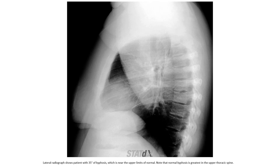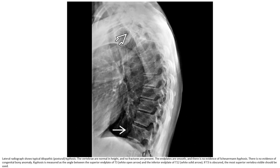Note that normal kyphosis is greater in the upper thoracic spine. In idiopathic kyphosis, the vertebrae are normal in height and no fractures are present. The endplates are smooth with no evidence of Scheuermann kyphosis, and there is no evidence of congenital bony anomaly. Kyphosis is measured as the angle between the superior endplate of T3 and the inferior endplate of T12. If T3 is obscured, the most superior visible vertebra should be used.